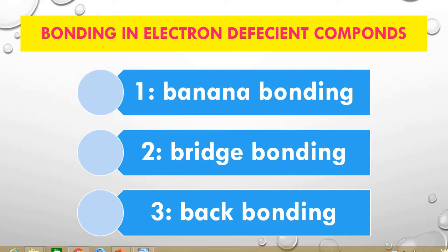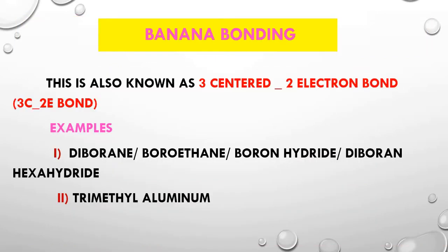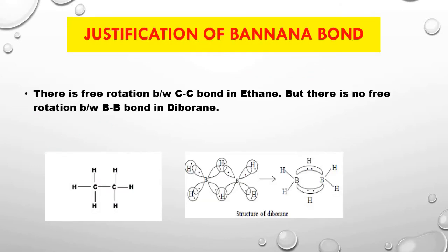Dear students, in the first lecture we were discussing bonding in electron deficient compounds. There are three kinds of bonds formed in electron deficient compounds: banana bonding, bridge bonding, and back bonding. We have discussed banana bonding. A banana bond is also known as a three-center two-electron bond. In the last lecture we discussed its formation and examples. Today we discuss the justification of banana bond.